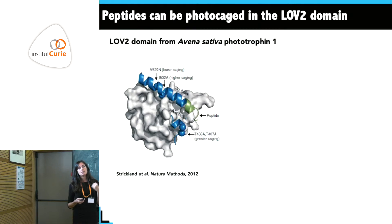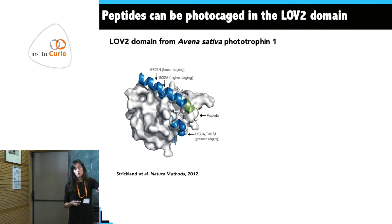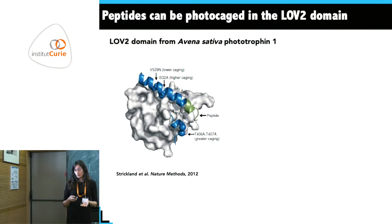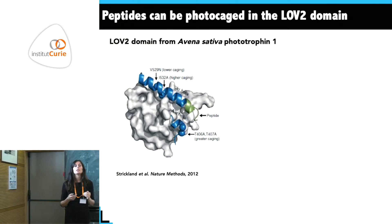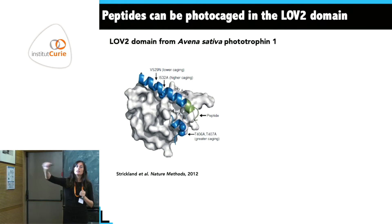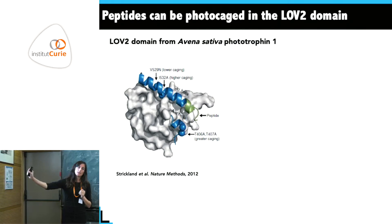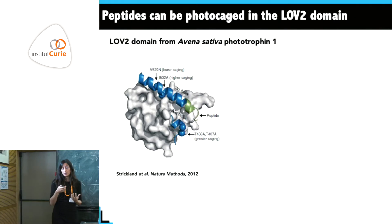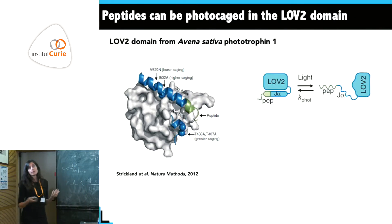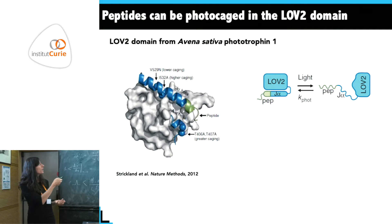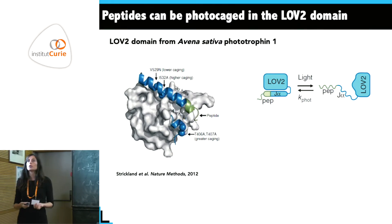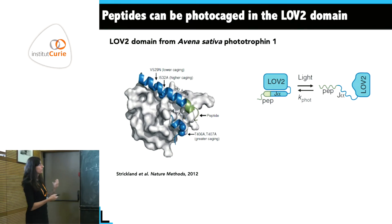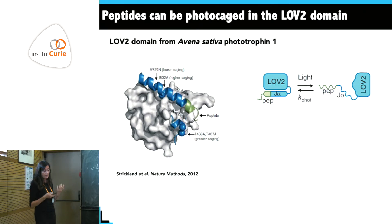The assumption is that in the dark state this peptide cannot bind to its cognate domain, but when you shine light, the unfolding and displacement of the helix from the core domain releases the photocaging. As shown in the schematic, in one conformation the peptide cannot bind its partner domain; in the lit conformation it can.